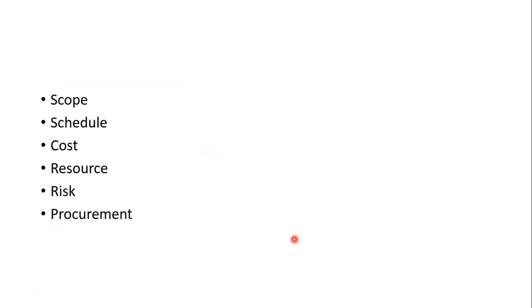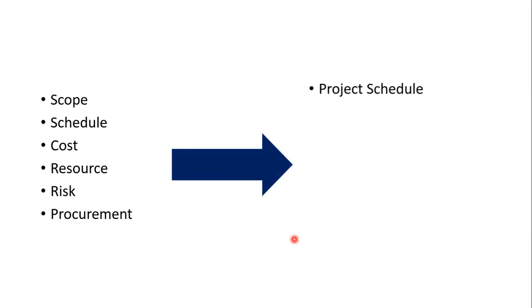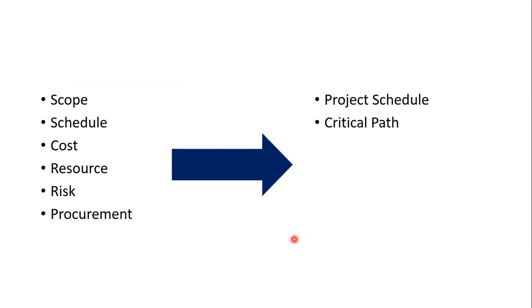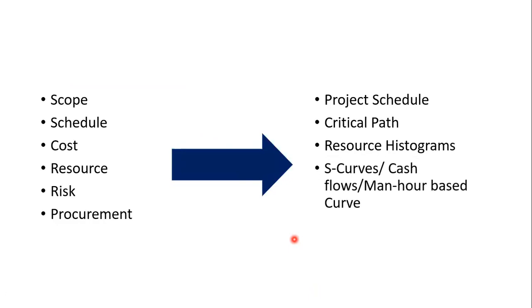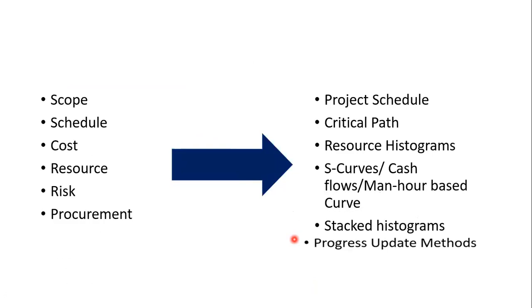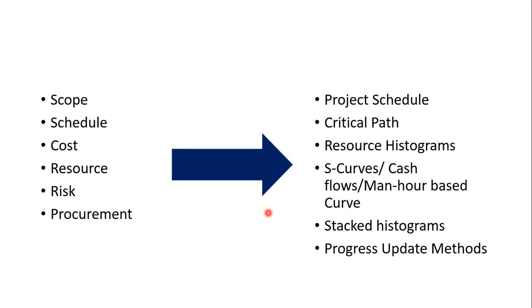The planning phase outputs include the project schedule, critical path — a very important element — resource histograms, S-curves, cash flows, manpower-based S-curves, stacked histograms, and progress update methods showing how to monitor your shutdown or maintenance work. I want you to grab this idea. If you go along with me during this course, I assure you will grip planning and scheduling techniques in Primavera 6 in an effective way, as per industry practices.